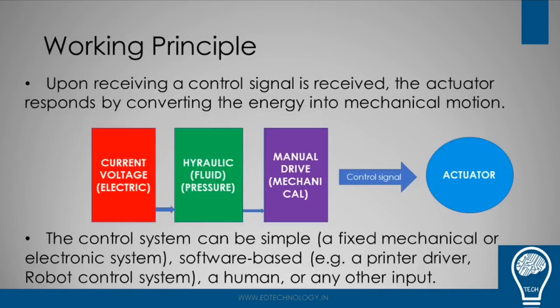Let us understand the working principle of an actuator. Upon receiving a control signal, the actuator responds by converting the energy into mechanical motion. As shown in the diagram, current and voltage is the electrical component of the actuator; it also has hydraulic or fluid pressure as the second component; and the third is a manual drive or mechanical component. When a control signal is received, the actuator activates all three. A control system can be simple or complex — software-based, human-driven, or any other input-based mechanism that actuates the actuator.